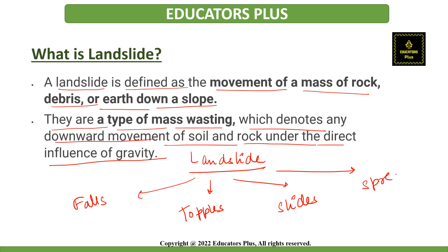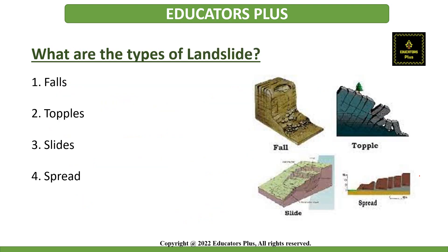The term landslide encompasses four modes of slope movements. These four modes of slope movements are falls, topples, slides, and spreads. Let's discuss these four types of landslides.